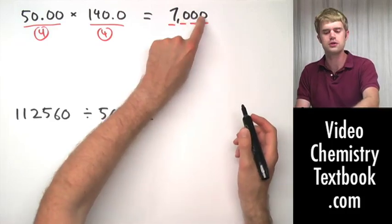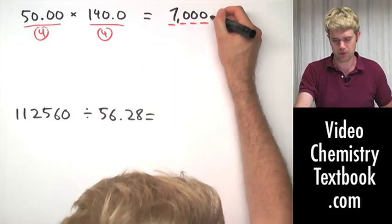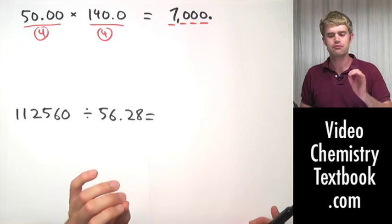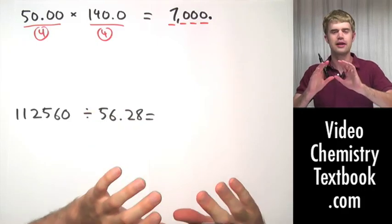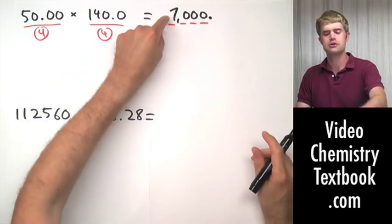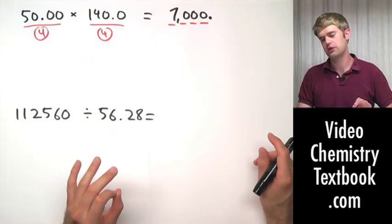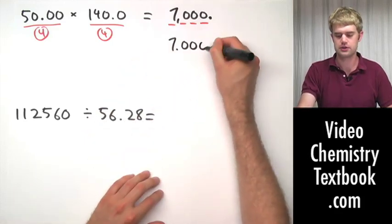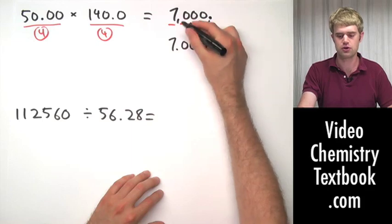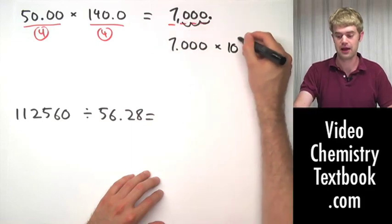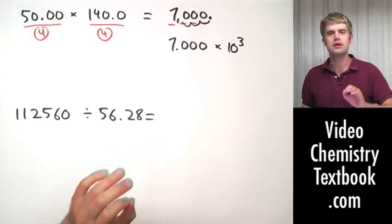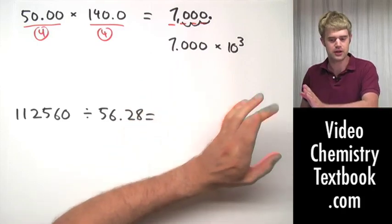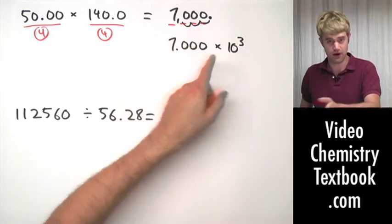So one thing that I could do to show that these three zeros are significant is to add a decimal place. But the really precise, accurate thing that is universally understood is to put this number into scientific notation. So I write this 7,000 as 7.000 and move the decimal place one, two, three spots to the left times 10 to the third. Now there is no doubt at all that these zeros are significant, because zeros to the right of a decimal place are always significant if they follow a non-zero digit.